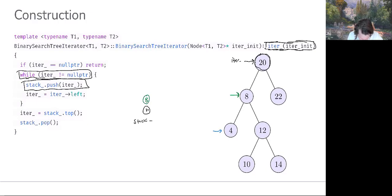So at this point, iter is not equal to the null pointer. So we're going to get into the body of our while statement again. We'll push back the address to this node to our stack, and then we'll move iter to iter's left. And guess what?